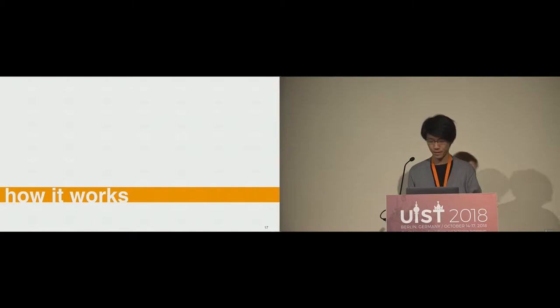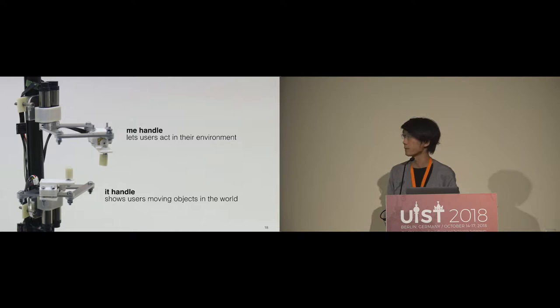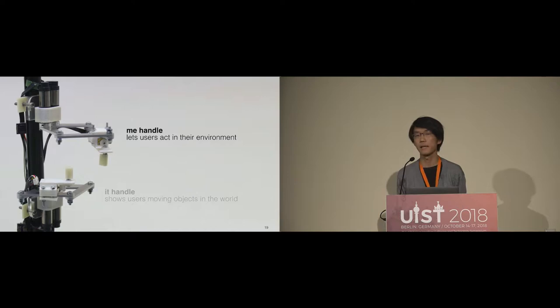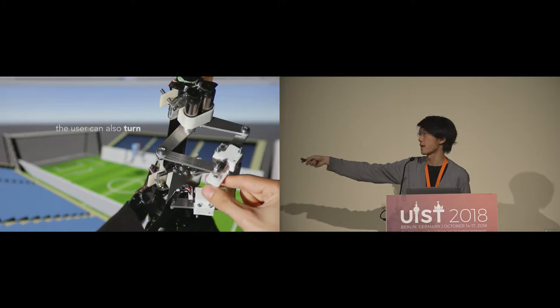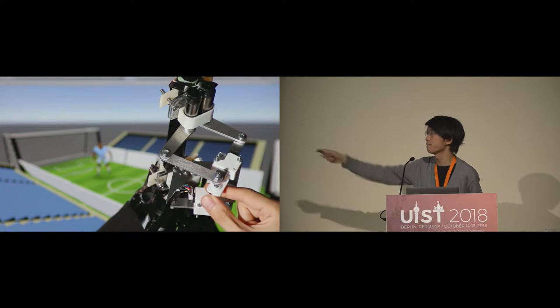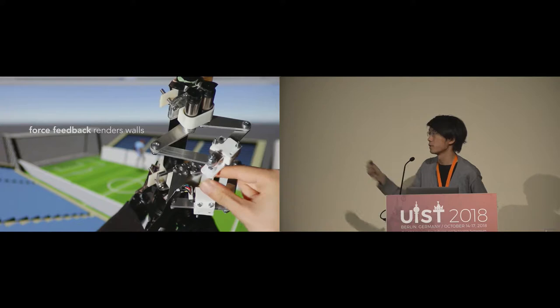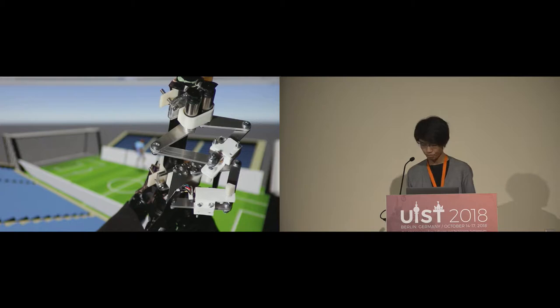Let me explain how it works. This system consists of two main components: the me handle and the it handle. Taking a soccer game as an example — you grab the me handle and move around, which also moves a soccer player on the virtual field. You can turn the virtual avatar by rotating the handle. Since this is a haptic device, you can also feel the virtual environment, like a wall or obstacle.